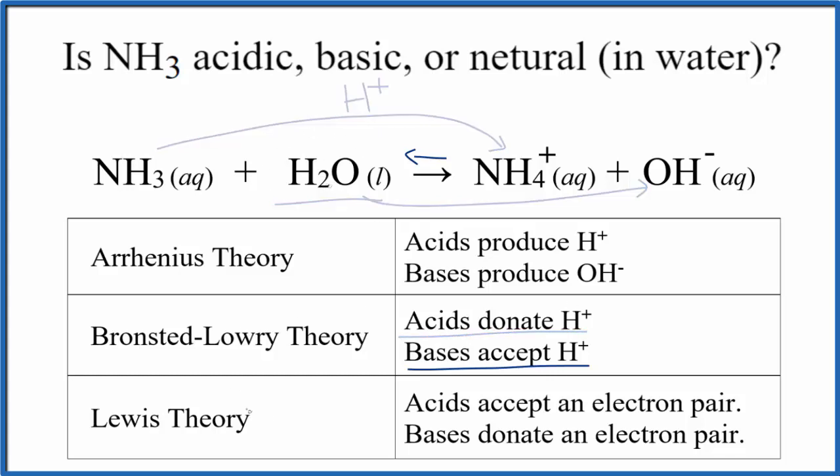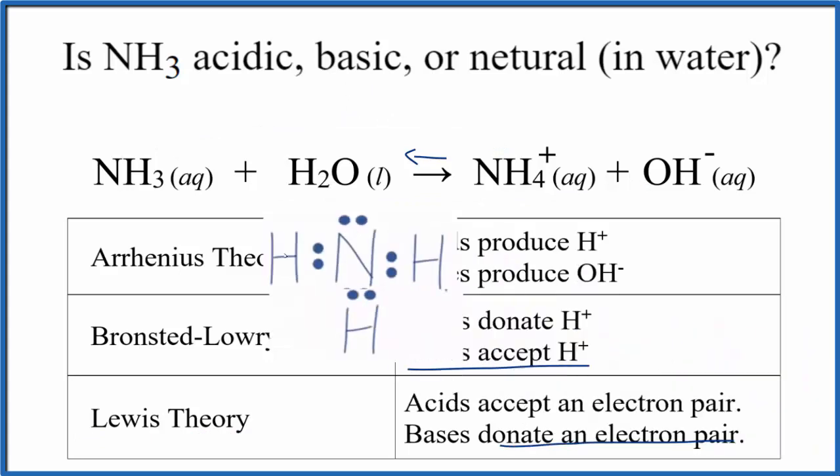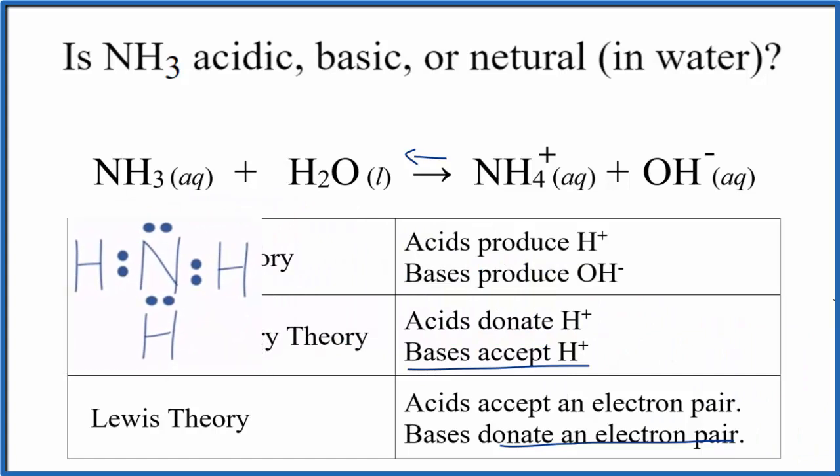Our last theory is the Lewis theory, which says that bases donate an electron pair. If we look at the Lewis structure for ammonia, you'll see there's this unbonded pair of electrons. Those are the pair of electrons that NH3 can donate to an atom or another molecule.